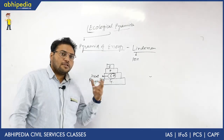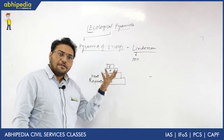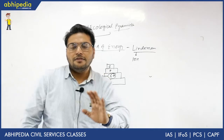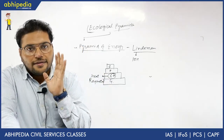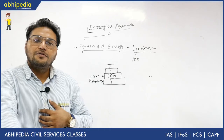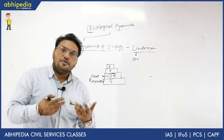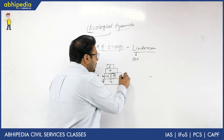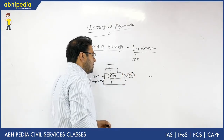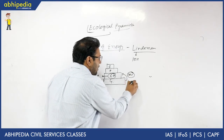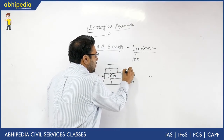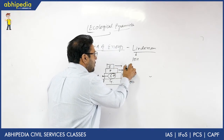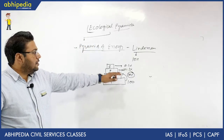If energy at the first trophic level is 100, then at the next level it is 10, then 1, then 0.1. So only 10% energy transfers from one trophic level to another. Now this value can vary from 10% to 35% depending on the ecosystem, but the general idea is that only about 10% energy transfers.